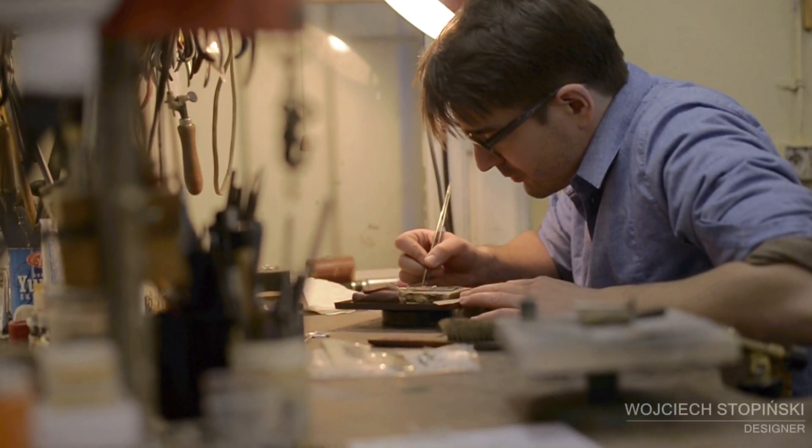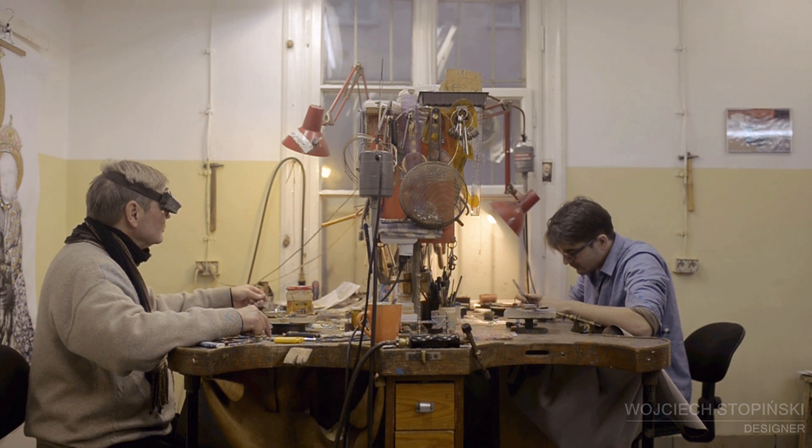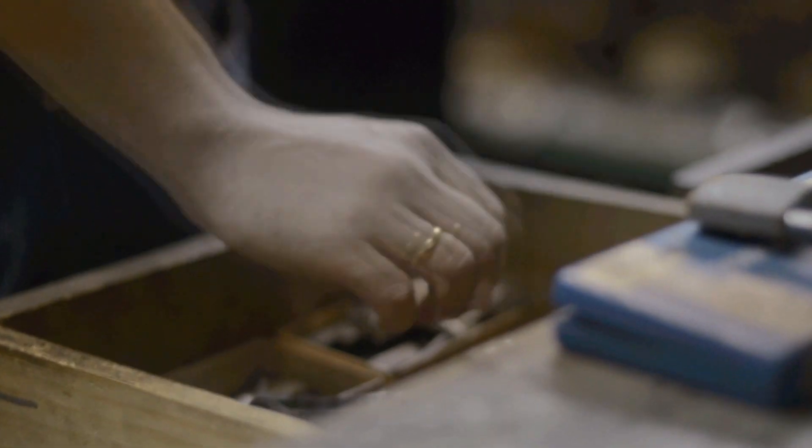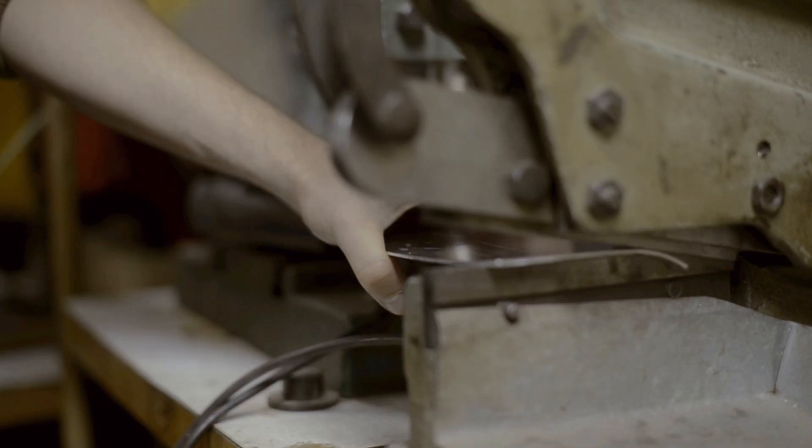Hello, my name is Wojtek Stapinski. We are currently at my father's workshop. Our family business has been in the market since the 70s. We produce a variety of unique metal objects, from blacksmithing to gold smithery.